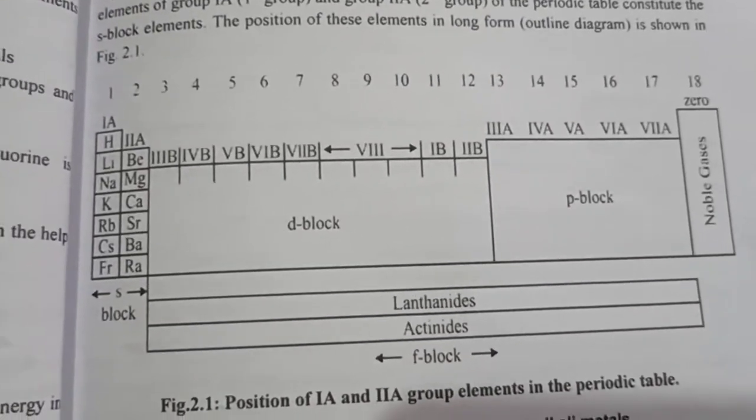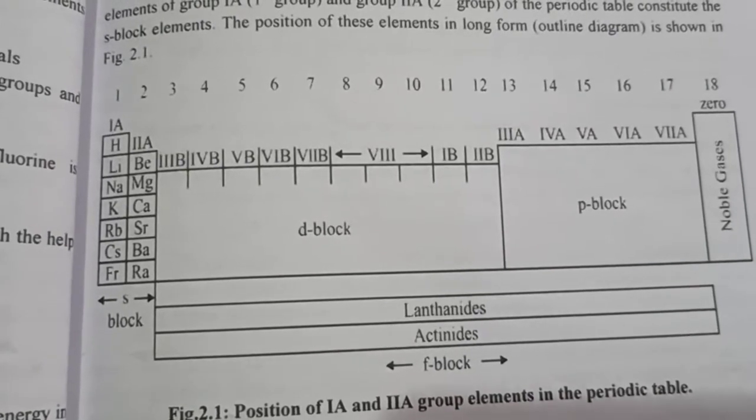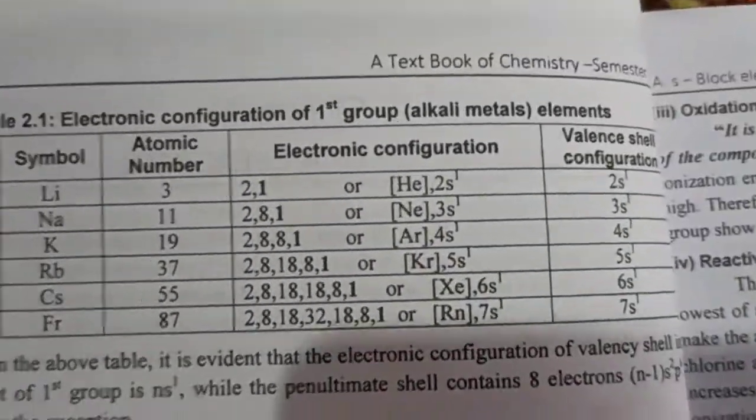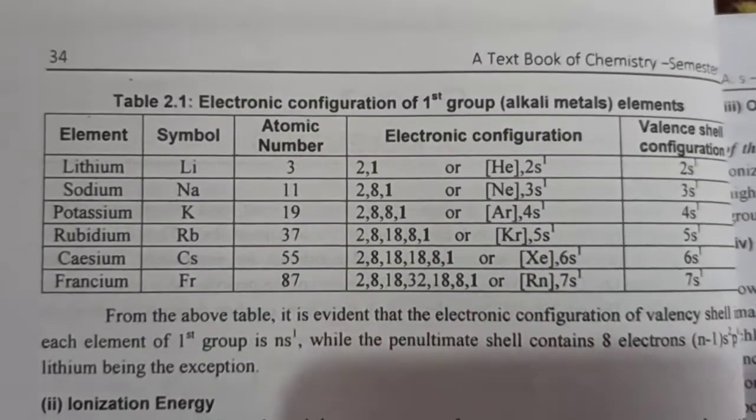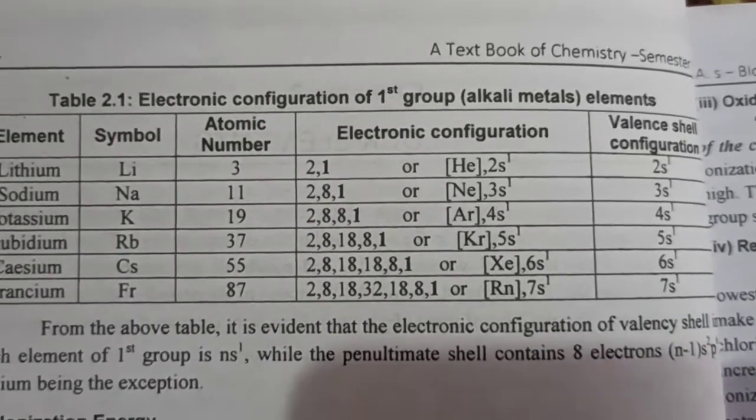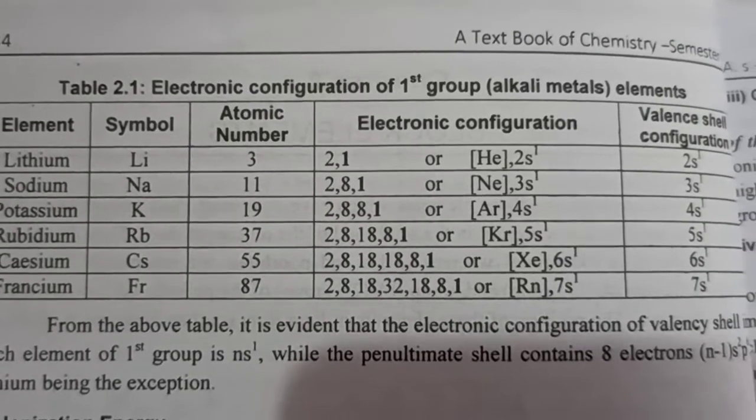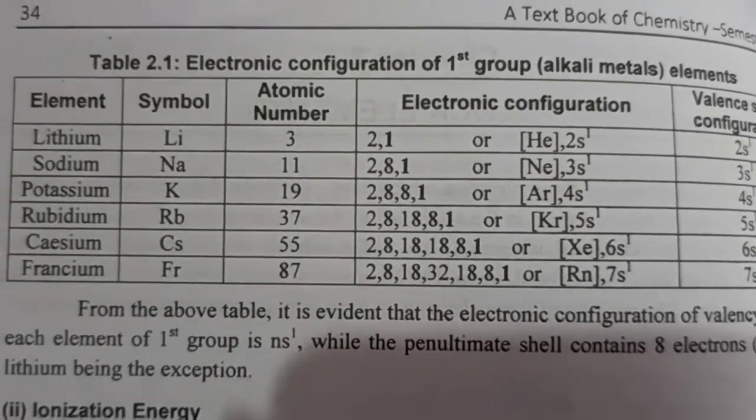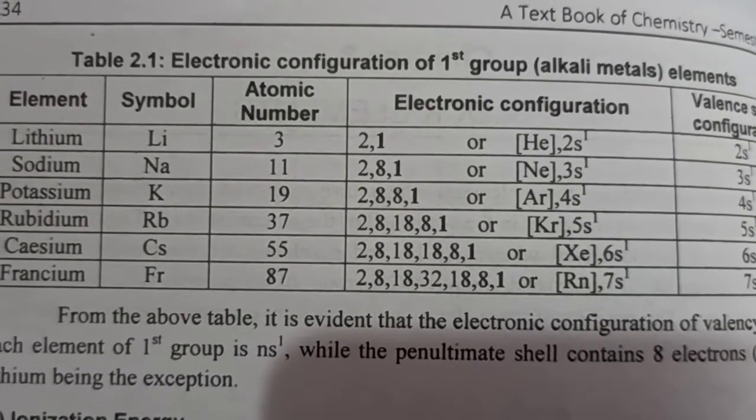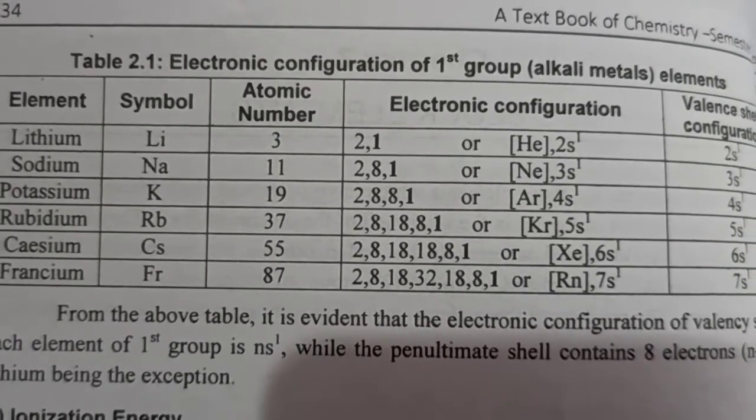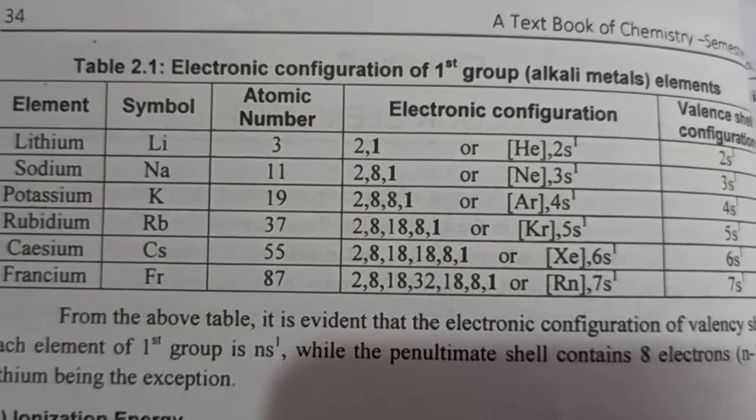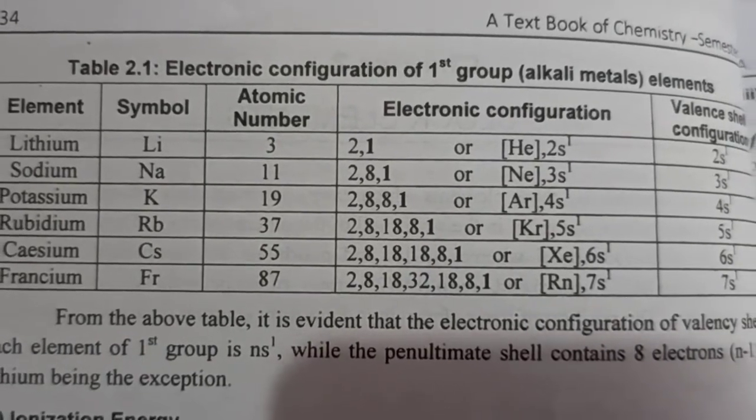Now we will discuss the electronic configuration of this S-block. If you consider the electronic configuration of the group, we will consider the first group elements: Li, Na, K, Rb, Cs, and Fr. You have to note down the atomic numbers of these elements. Lithium has atomic number 3, Sodium 11, Potassium 19, Rubidium 37, Cesium 55, and Francium 87.